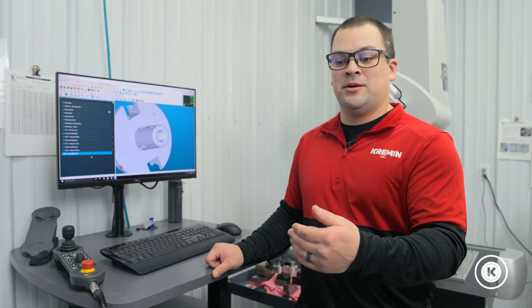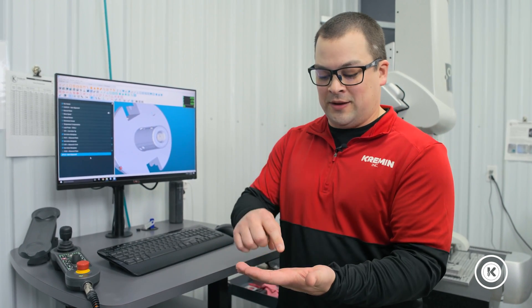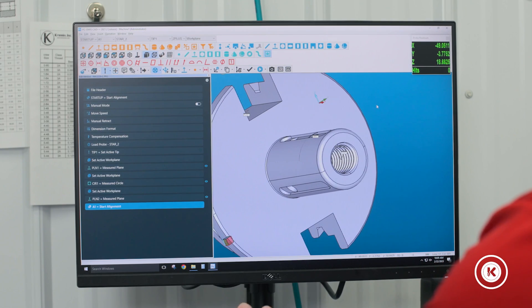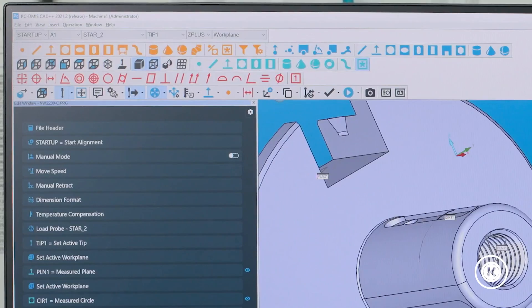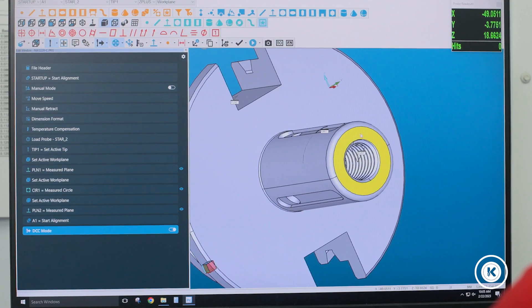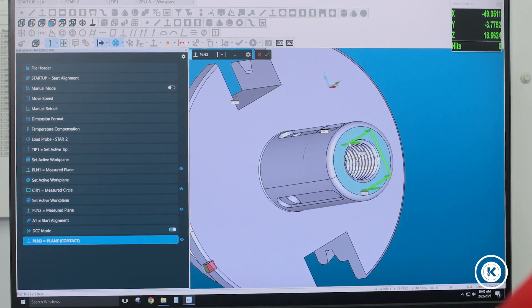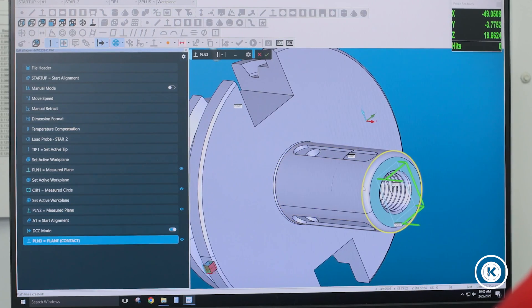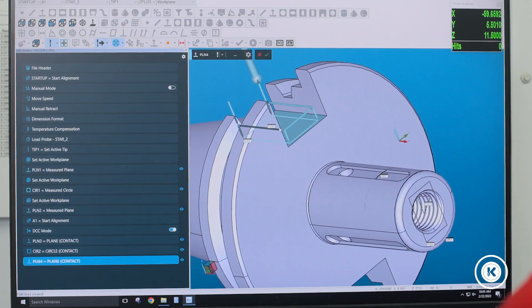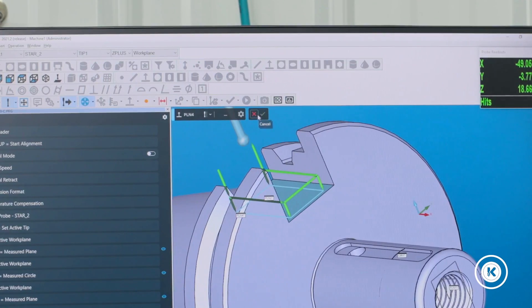With that, now the part is synced with the program and the CMM. As the probe shows where it's at on the part with the CAD model, the probe is in the exact same spot on the physical part. Now that we've done the manual alignment, let's add an auto alignment. This will give the CMM the capability of touching the part in the exact same spots every time, so it's going to align that part just perfectly. We'll use the same features that we used for the manual. We're going to change our probe mode to DCC mode, which is auto mode.